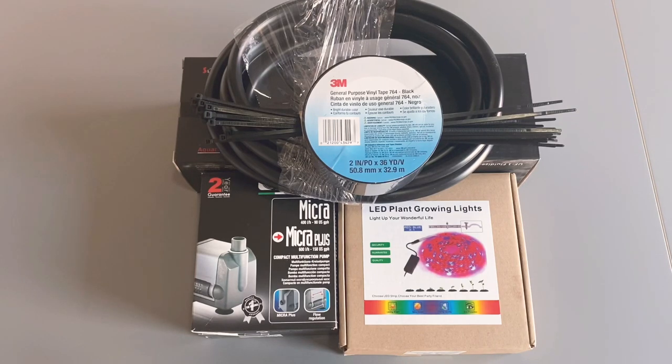You're going to need some plant growing lights, a pump, vinyl tape, some zip ties, and half-inch tubing. The grow lights and the tape I ended up getting from Amazon, so I will leave the links in the description below. The Micro Plus pump and the vinyl tubing I ended up getting from MarineDepot.com. If you have any questions, please leave me a comment. If you like the video, please give it a thumbs up and subscribe to my channel. I would really appreciate it. So let's get into it.